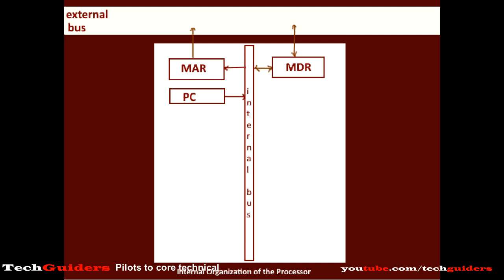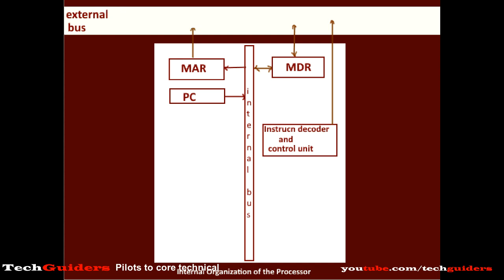The control unit of the processor, which communicates with the external control bus, keeps a read signal on the external control bus. With the address on the address bus, the data corresponding to that address — which is the first instruction of the program — will be read from memory to the external data bus. The external data bus communicates with the processor using the memory data register. Thus, the instruction will be transferred to the memory data register and from there fetched to the instruction register.